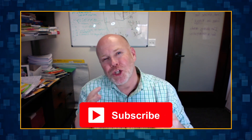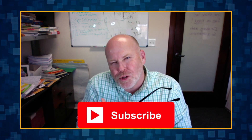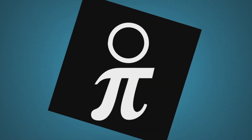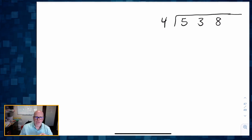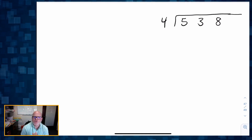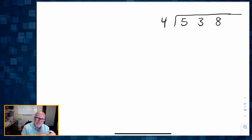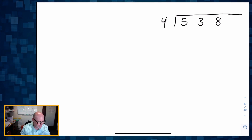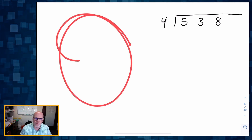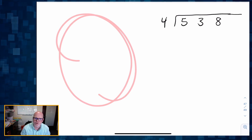In this video, I'm going to show you an alternate to the normal long division algorithm. It's called the explicit trade method. So let's get started. We're going to do 538 divided by four, and we're going to connect it to a nice, beautiful visual representation over here.